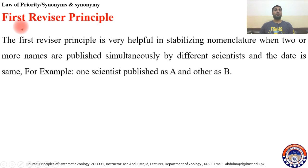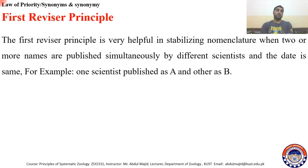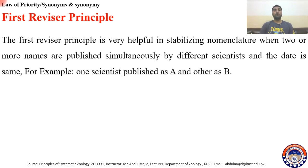What is the First Reviser Principle, and this is very important in the Law of Priority. The First Reviser is a person, and the First Reviser Principle is a rule of the code. The First Reviser Principle is very helpful in stabilizing nomenclature. Stabilization of the nomenclature is very important, as discussed in the previous lecture.